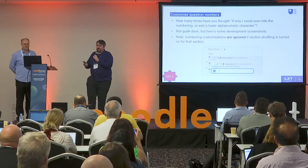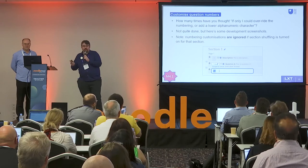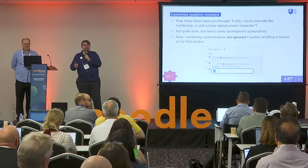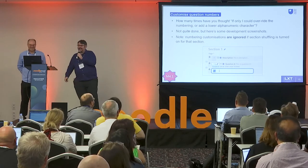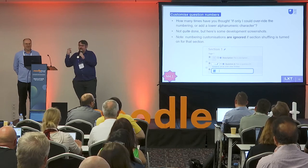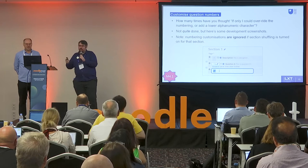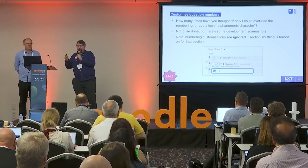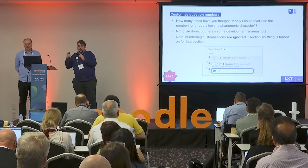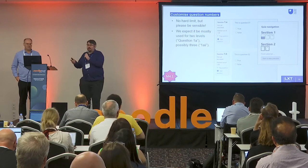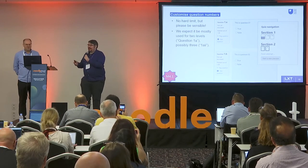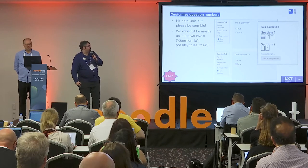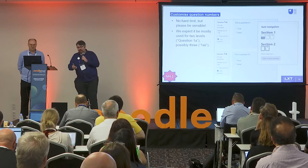This is a big one — lots of people have been asking about it on the community for years: the ability to override the question numbering within the quiz navigator. This is thanks to our colleague Mahmood. We've designed this so that you can add one or two levels to it. It's not quite done at the moment — this is a dev screenshot — but it will be finished very soon. One thing to notice is that if you have shuffling turned on, it just ignores any overrides that you set. We've got no hard limit on the amount of characters, but please be sensible with what you do with them. We're expecting people to use it as question 1a or question 1a2 in lower Roman numerals. It does wrap, so it still looks all right if you've got more characters.